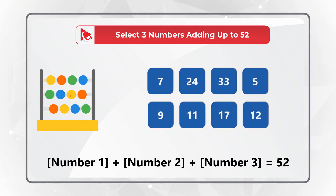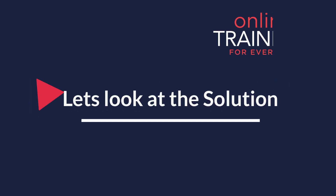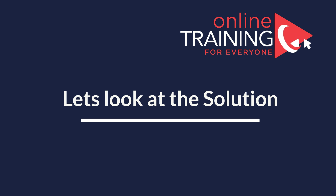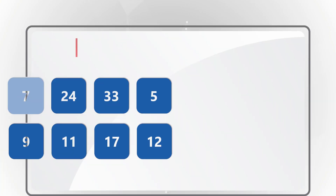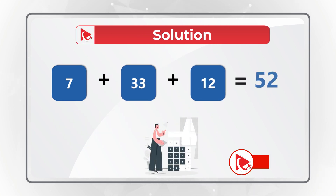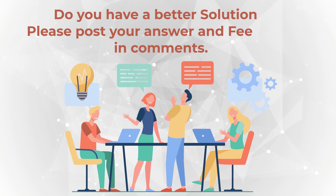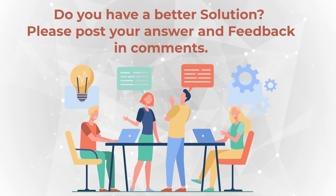Give yourself 10 to 15 seconds — pause this video to get to the correct solution. The correct numbers are 7, 33, and 12, because 7 + 33 + 12 = 52. Keep in mind this may not be the only solution — there are often other options available. Do you see any other set of numbers that leads to 52? If you found another possibility, please post in comments.